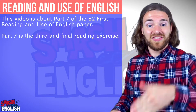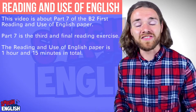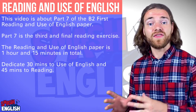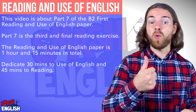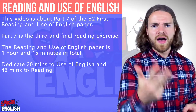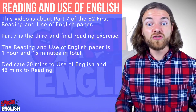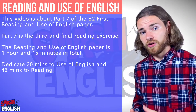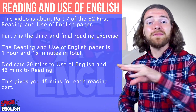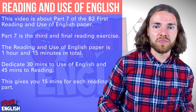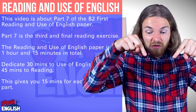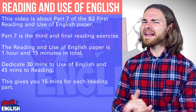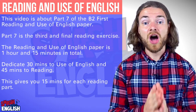The Reading and Use of English Paper itself is 1 hour and 15 minutes long. I suggest you dedicate 30 minutes to the Use of English part of the paper — that is parts 1, 2, 3 and 4 — and 45 minutes to the Reading part, that is parts 5, 6 and 7. This means you will have 15 minutes for each reading part, and that means for this part of the exam you will have 15 minutes. I believe that's enough time for you. Seriously, I believe in you.